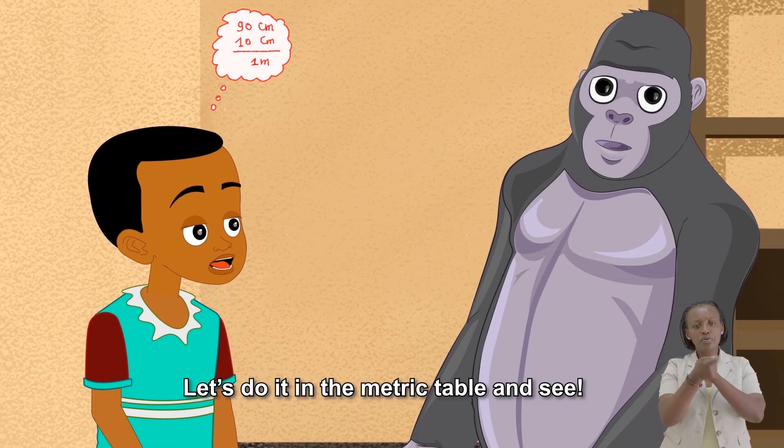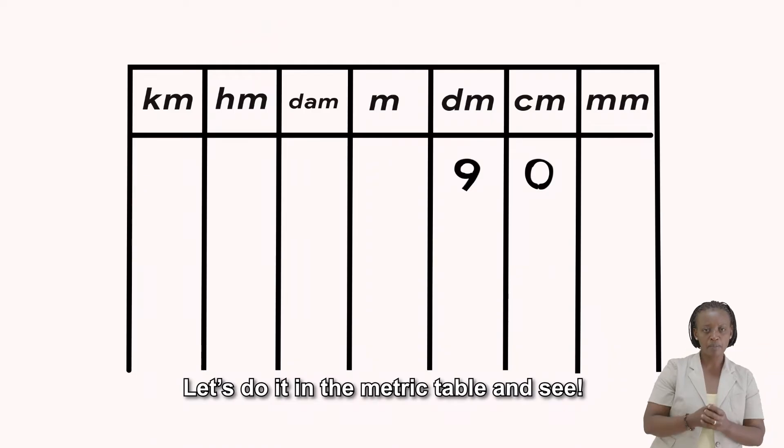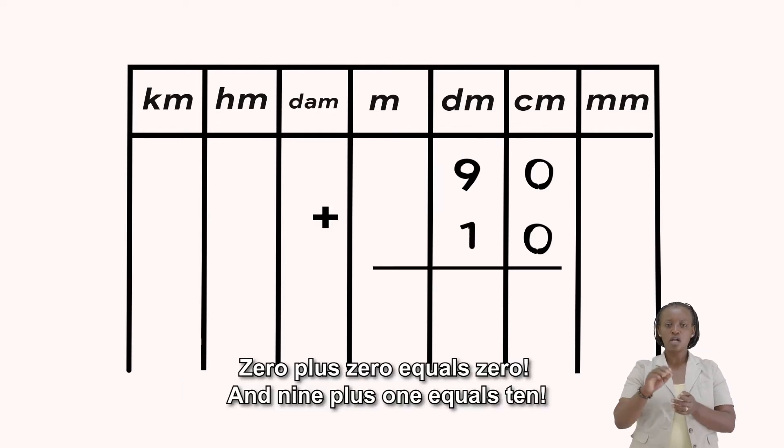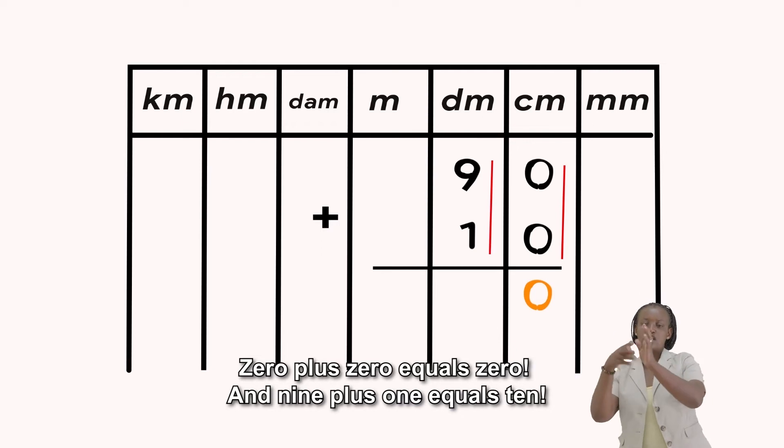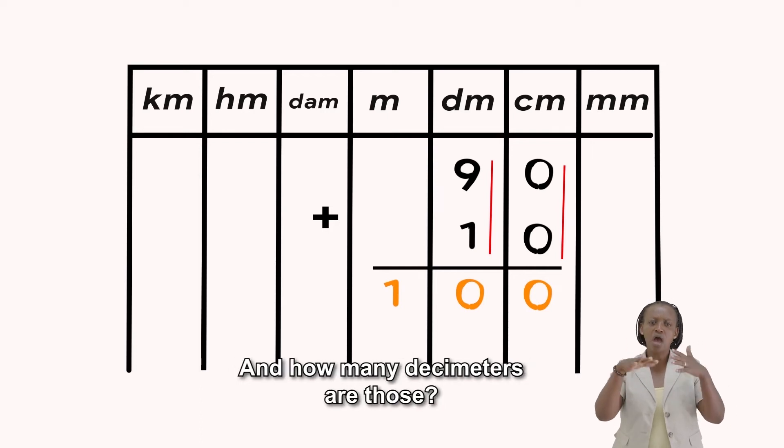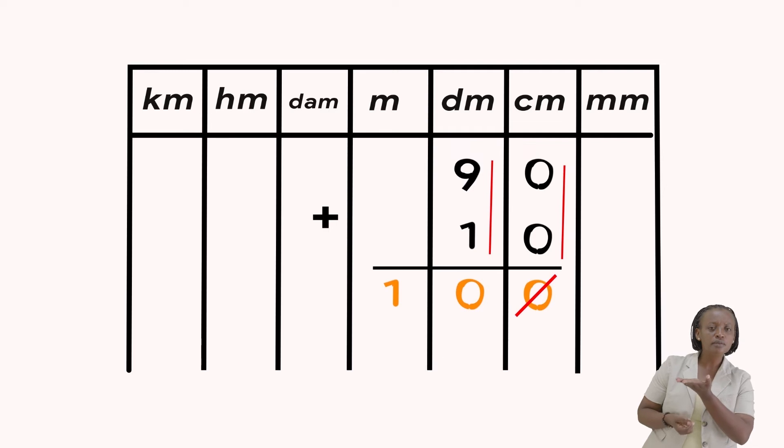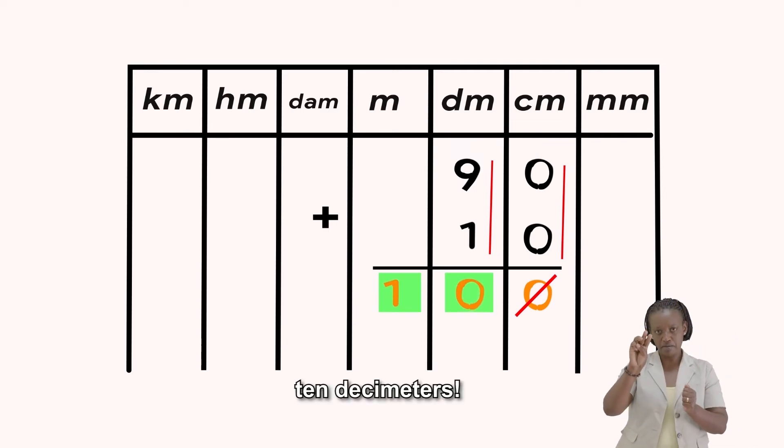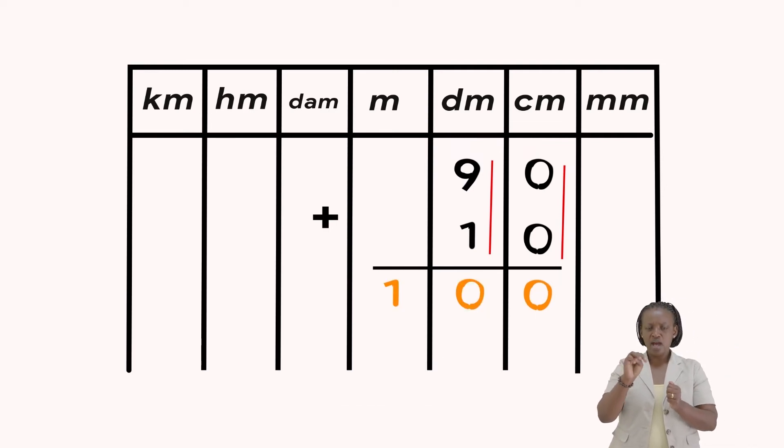Let's do it in the metric table and see. Zero plus zero equals zero. And 9 plus 1 equals 10. The answer is 100 centimeters. And how many decimeters are those? 10 decimeters. And 1 meter!